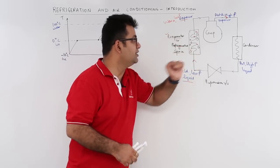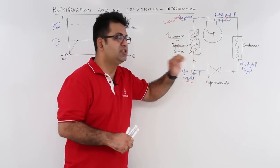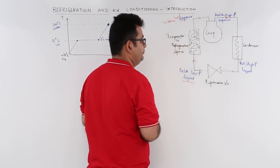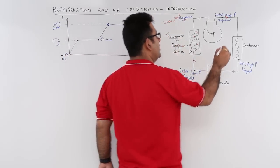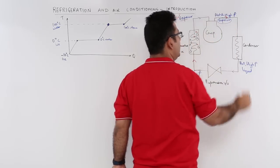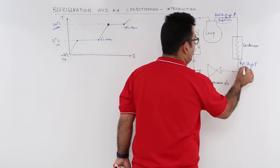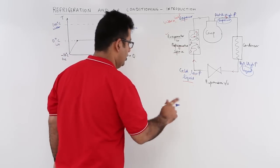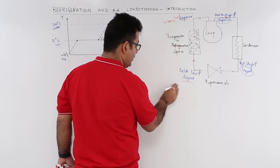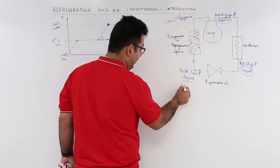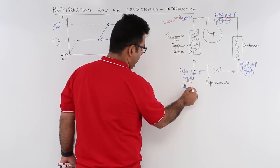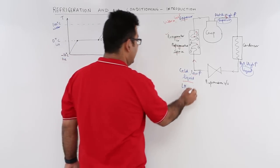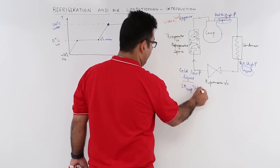What is the use of the condenser? Why do we have a condenser? The purpose of the condenser is to convert the vapor into liquid, because the latent heat of vapor is high as compared to the latent heat of liquid.